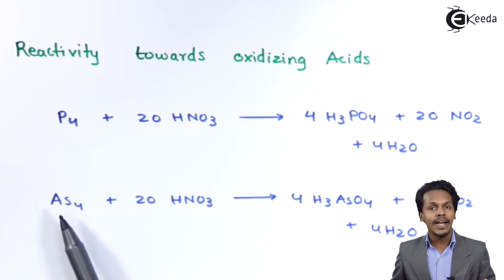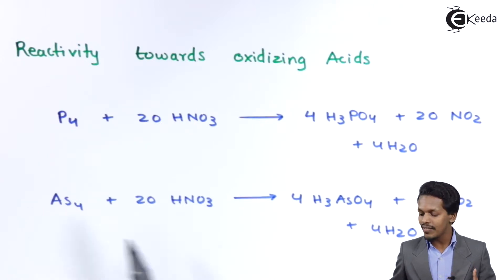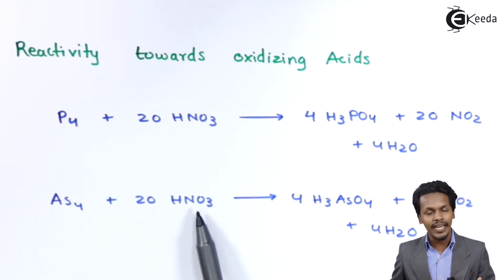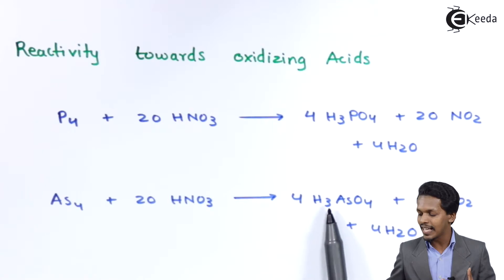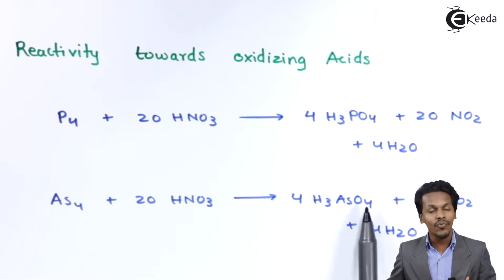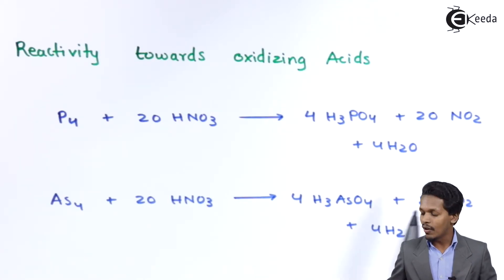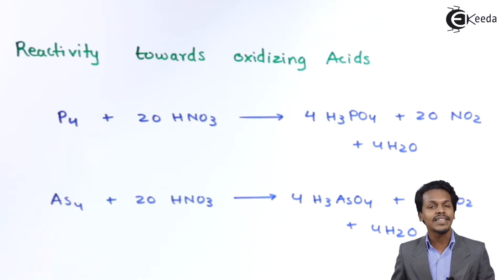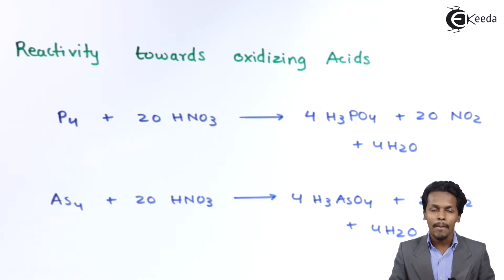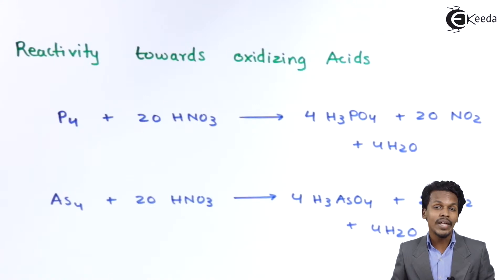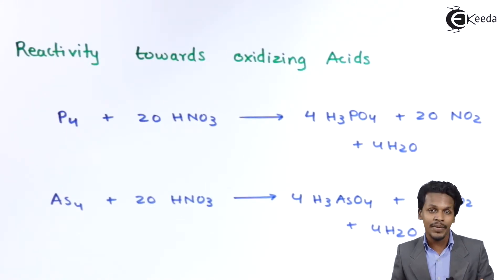Here arsenic is used. Arsenic whenever it reacts with hot and concentrated HNO3 will form H3AsO4, also known as arsenic acid, and it will also produce 20 moles of NO2 along with H2O as a by-product.